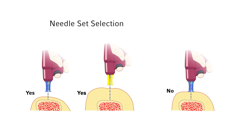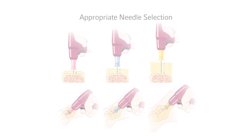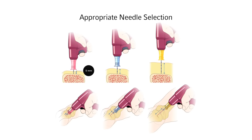Using a needle set that is too short will increase the risk of catheter dislodgement leading to extravasation, create a hole in the bone unnecessarily, and render the site unusable for future IO access for a minimum of 48 hours. Appropriate needle selection is evidenced by the black 5 mm mark visible above the skin when the tip of the needle set is touching the bone prior to drilling.